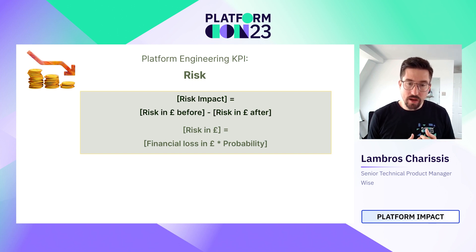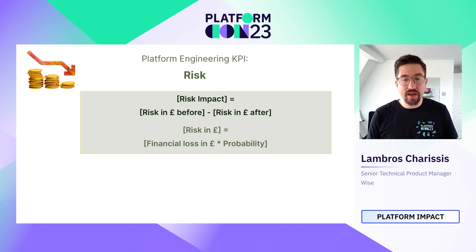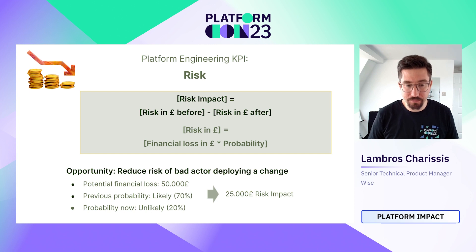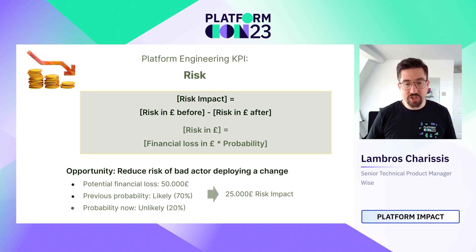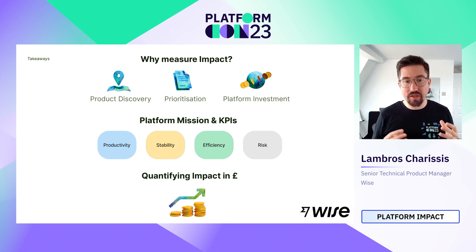For risk impact, we think about the risk score in pounds before and after an initiative. We quantify risk as: financial loss in pounds multiplied by the probability of the risk materializing. Example: a bad actor deploys a change to production, which we estimate would cost £50,000. Today this risk is likely to happen. We improve our change management, making it unlikely. The risk score before minus after gives a £75,000 risk impact.